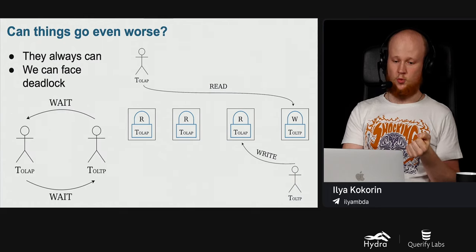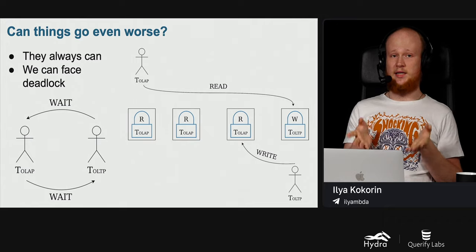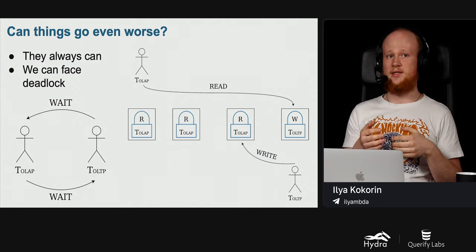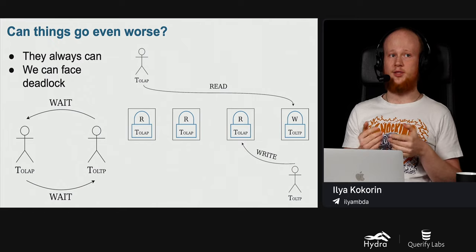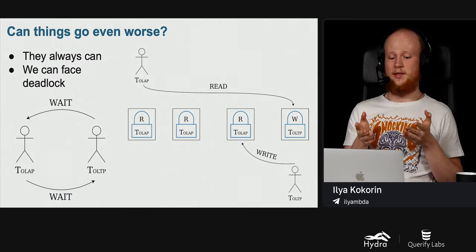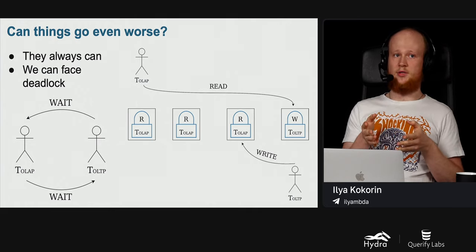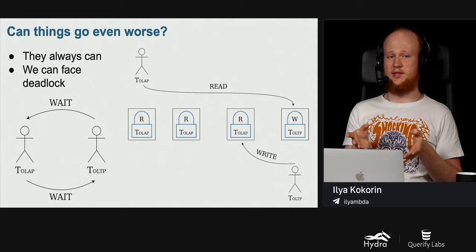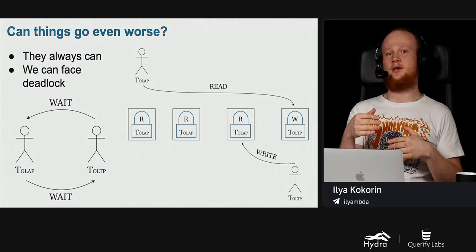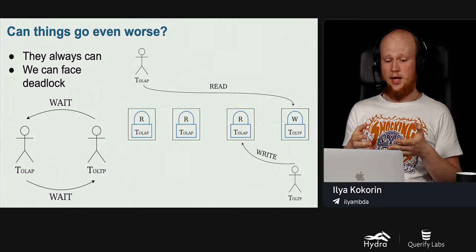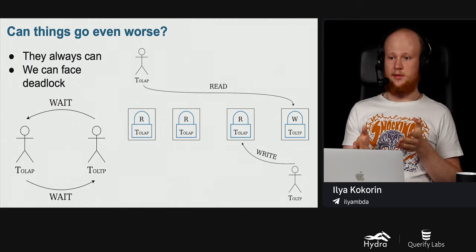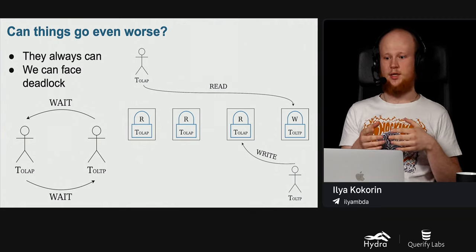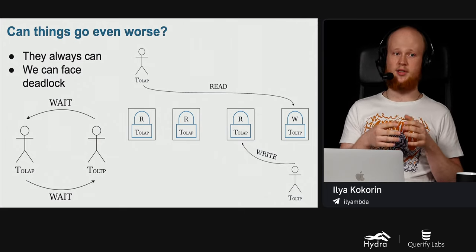Can things go even worse? In a database world, things always can go worse — we can face a deadlock. Suppose the OLAP query wants to read the last row but cannot because it has already been write-locked by the OLTP transaction. We have a cycle in our wait graph: the OLAP query waits for the OLTP transaction to release the last row, and the OLTP transaction waits for the OLAP query to release the third row. Deadlocks are costly — we must detect the deadlock, roll back one transaction, and retry it, increasing its latency.